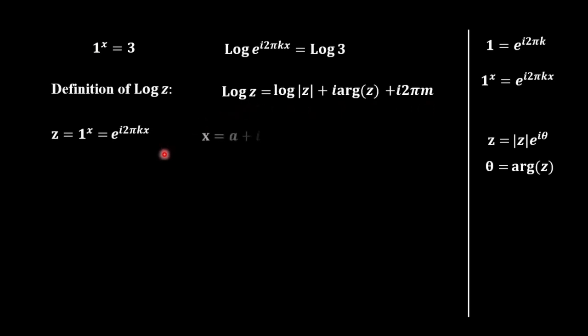So, we consider x as a complex number, a and b are real numbers, i is an imaginary unit. And then, we plug in x to the equation for z. We multiply first i, b, and i times 2πk. i times i will give us minus 1. So, we will have this exponent.